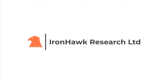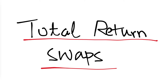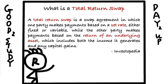Hey, what's up guys, welcome to another episode of the Real Life CFA. Today we're going to talk about total return swaps (TRS). A total return swap is a swap agreement in which one party makes payments based on a set rate, either fixed or variable, while the other party makes payments based on the return of an underlying asset, which includes both the income it generates and any capital gains.